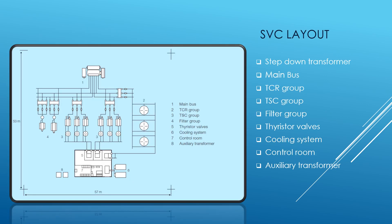Now let's look at the SVC layout. The layout on the screen is an ABB 500 MVAr SVC connected to the 132 kV controlled bus to stabilize the voltage during various network conditions, including major disturbances such as loss of feeding. As you can see, it contains a step-down transformer, thyristor-controlled reactor, thyristor-switched capacitor, filter groups, thyristor valves, cooling system, control system, and auxiliary transformer.